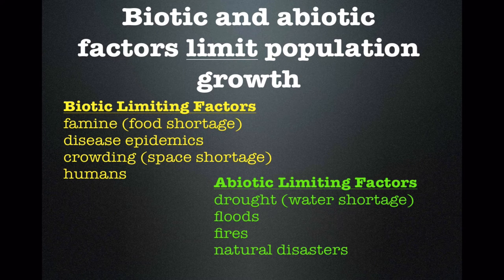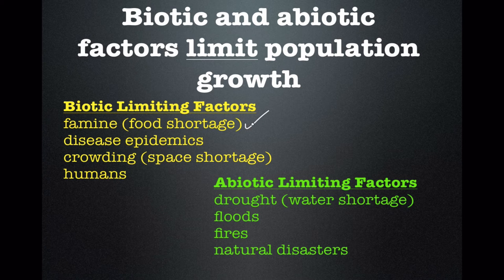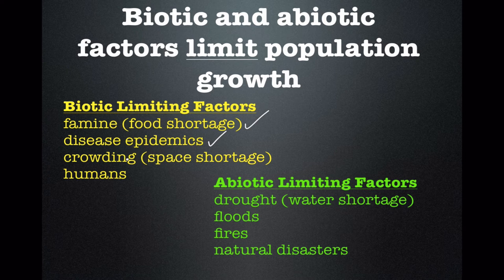Biotic and abiotic factors limit population growth. Biotic limiting factors involve things related to being alive — for example, food is plants, animals, and similar things, so a food shortage is a shortage of prey species or plants. Diseases are also organisms that are alive and may limit a population by killing off individuals. Crowding or a shortage of space is another factor — when individuals get crowded together, they tend to have more problems with disease and run out of food and water. Finally, people can limit the growth of natural populations, as humans tend to cut down woods and remove forests.